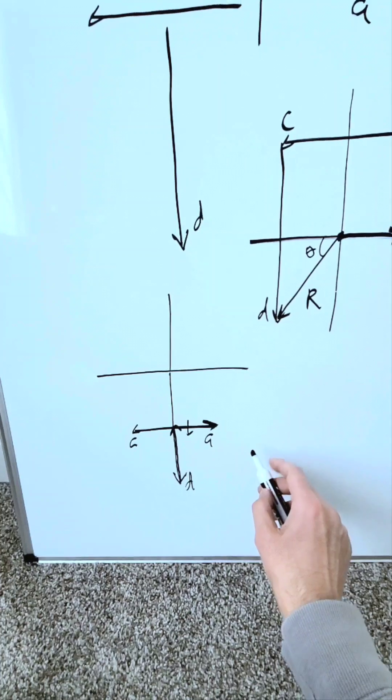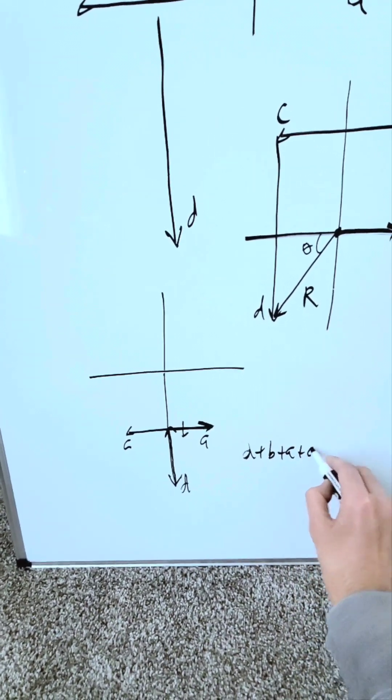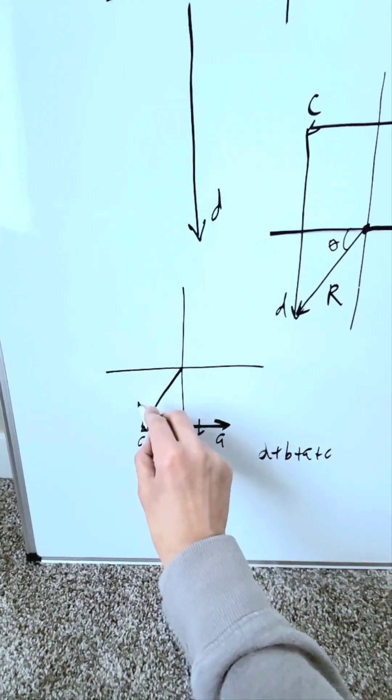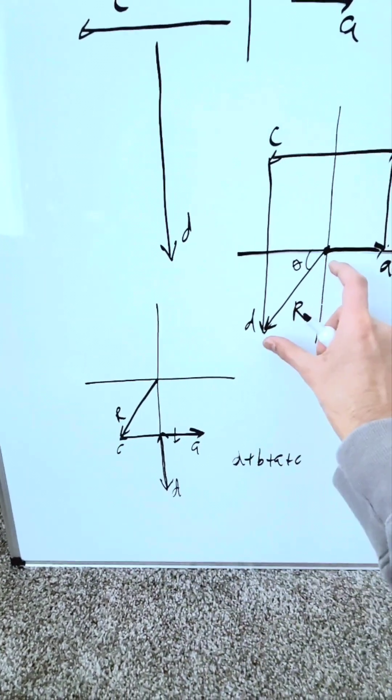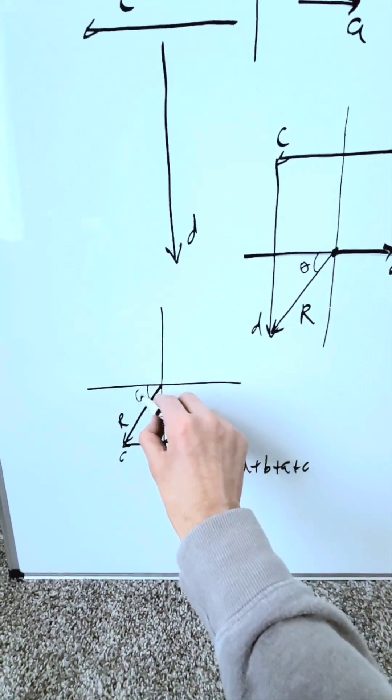Now look what I've done. I've ordered my vector addition as D plus B plus A plus C. Now here, this is my C endpoint from the origin. I'll connect over here my resultant. This resultant here will mirror this resultant here. It'll have a certain length, which will match that length. It'll have a certain angle, same as that.